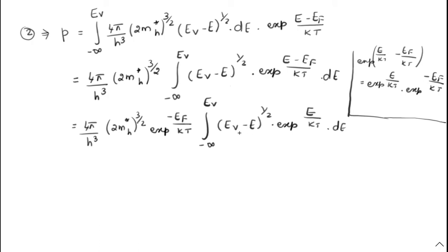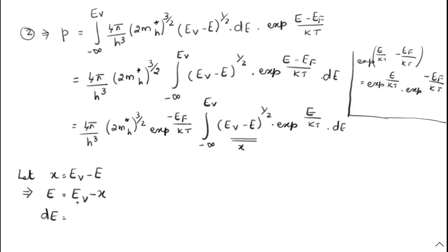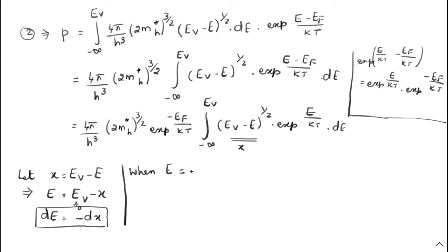Now we apply the same substitution as in the previous case. Let X = EV − E. Differentiating, DE = −DX, and E = EV − X. For the lower limit, when E = −∞, X = EV − (−∞) = +∞. For the upper limit, when E = EV, X = EV − EV = 0.